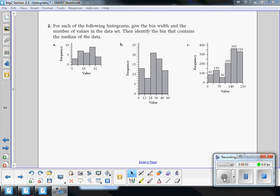This is number 2 on page 7 in the white packet for 2.3 histograms. For each of the following, you want to give the bin width and the number of values in the data set as a whole.